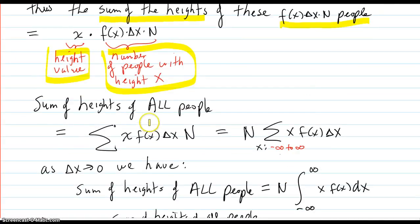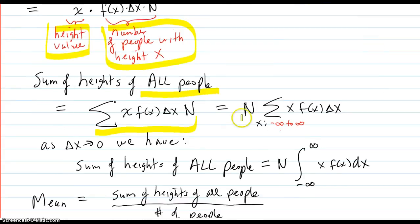So now we want the sum of the heights of all the people in the entire U.S. So that would be summing up all those individual sums of heights from the people with heights between x and x plus delta x.